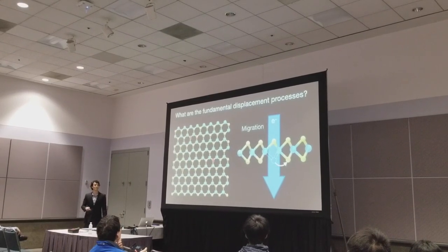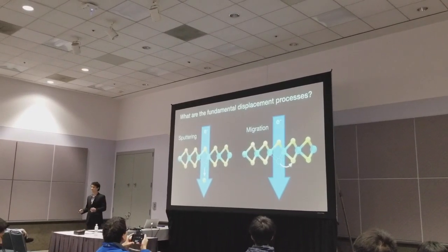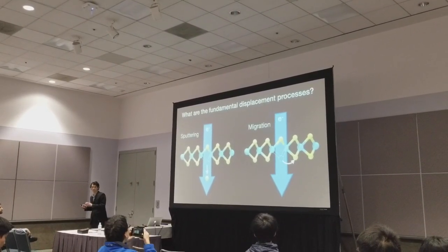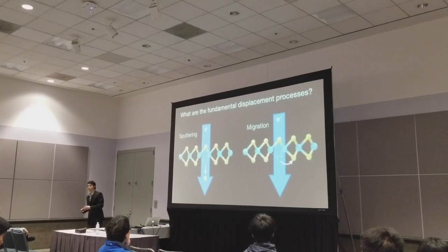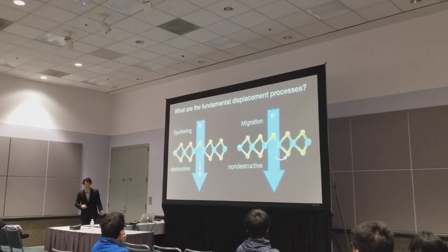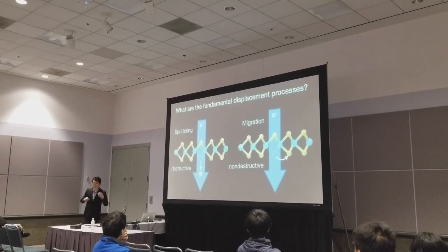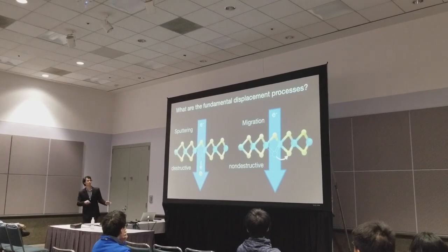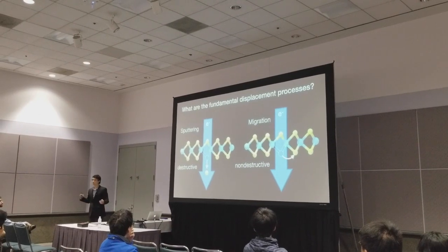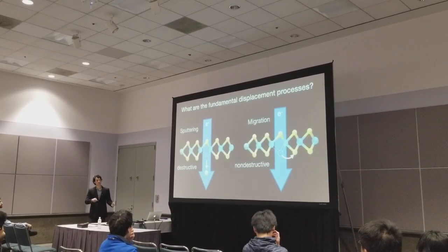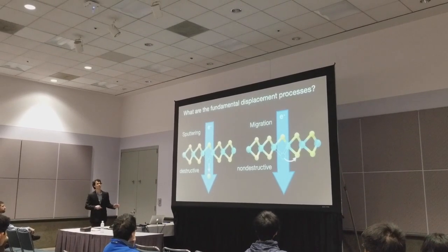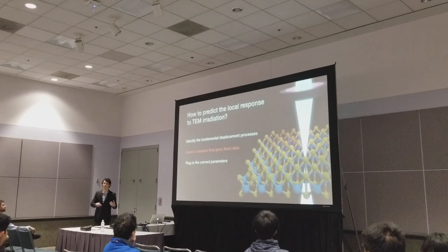There's a key distinction between migration and sputtering: migrations are reversible. So if a vacancy moves to the left and then back to the right, the system is right back where it started. Sputtering, however, is irreversible — an atom that sputters is not going to come back. So migration is non-destructive while sputtering is destructive. Wouldn't it be great to maximize migration rates while limiting sputtering rates? The first step is to develop a way to predict all of our relative rates.